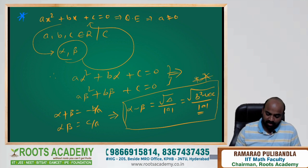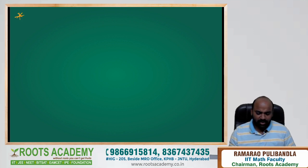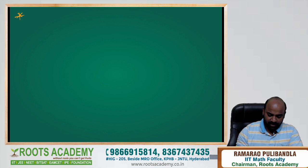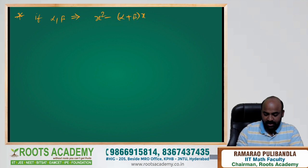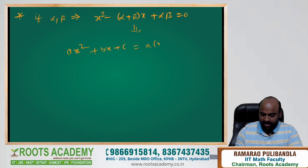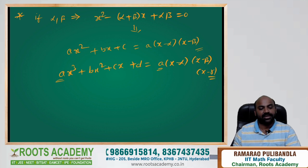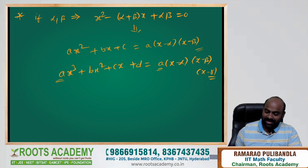If the roots alpha and beta are given, then the equation is x² − (sum of roots)·x + (product of roots) = 0. This can also be written as a·(x−α)·(x−β). When I have three roots, ax³ + bx² + cx + d can be written as a·(x−α)·(x−β)·(x−γ). Writing the product of factors from the roots is very important — this is the second concept to remember.